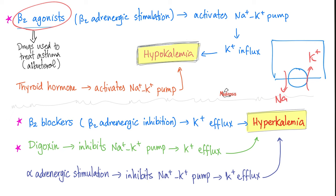Hyperthyroidism can have the same exact effect and lead to hypokalemia. If beta agonists cause hypokalemia, what do beta blockers do? The opposite — hyperkalemia — because they inhibit the sodium-potassium ATPase. What else inhibits the sodium-potassium ATPase pump? Digoxin, which means it can also lead to hyperkalemia.